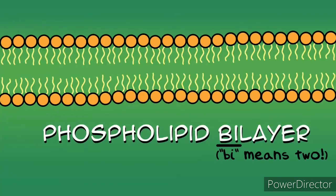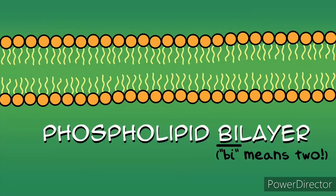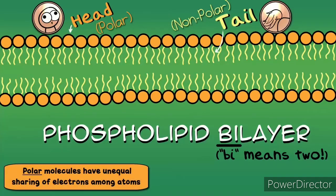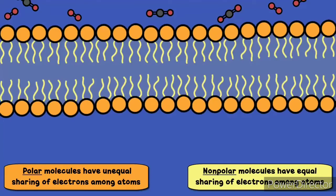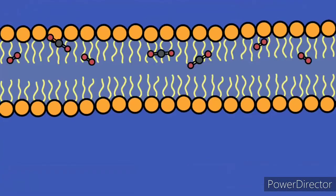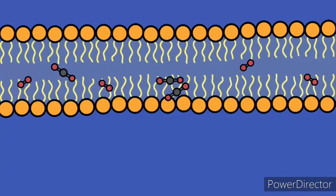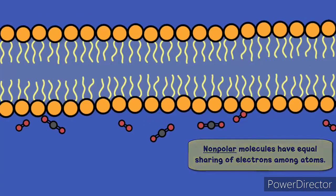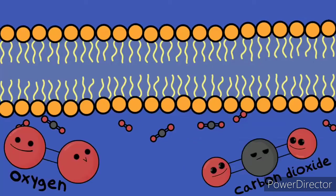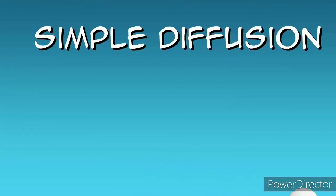Bilayer means two layers, so you have two layers of lipids. These lipids are called phospholipids. They have a head that is polar and a tail that is non-polar, making them quite unique. Some molecules have no problem going through the cell membrane and directly go through the phospholipid bilayer. Very small, non-polar molecules fit in this category — like some gases, oxygen and carbon dioxide. This is known as simple diffusion.